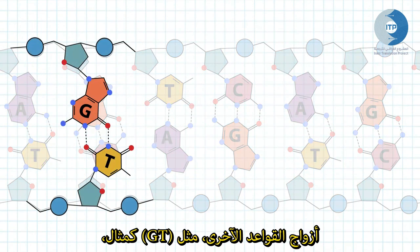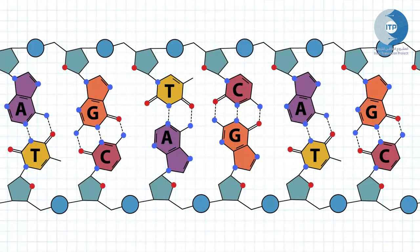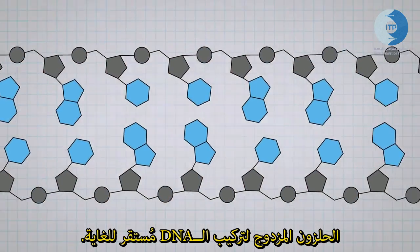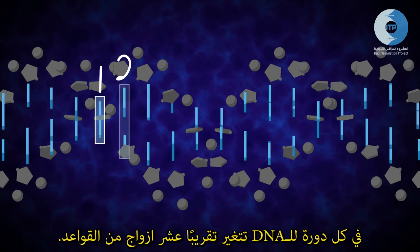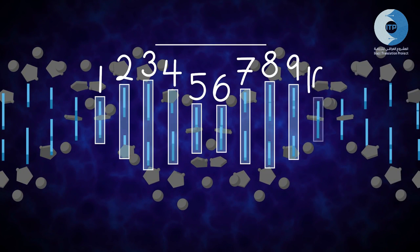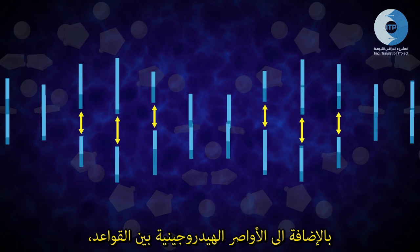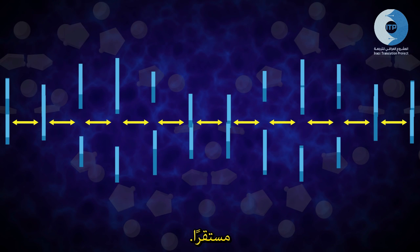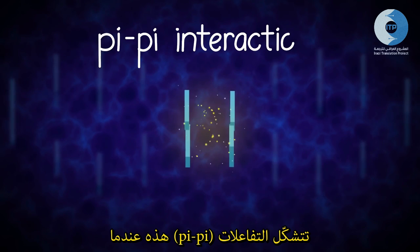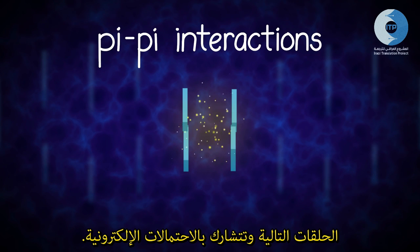Other base pairs, like GT for example, do not have the same geometry, cannot form strong hydrogen bonds, and disturb the helix. The double helix structure of DNA is highly regular; each turn of the helix measures approximately ten base pairs. In addition to the hydrogen bonding between the bases, the stacking of the bases also stabilizes the double helix structure. These pi-pi interactions form when the aromatic rings of the bases stack next to each other and share electron probabilities.